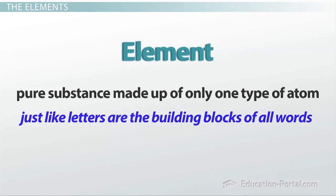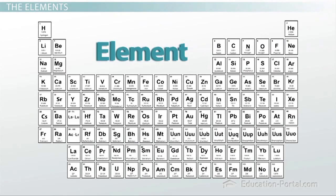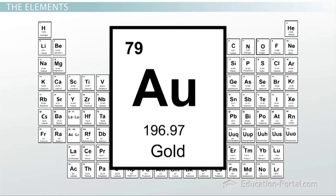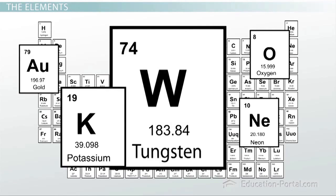There are currently 118 known elements represented on the periodic table. Some are found in nature, and others are created in laboratories. Each little block on the periodic table represents one element. Some examples of elements are gold, oxygen, neon, potassium, and tungsten.